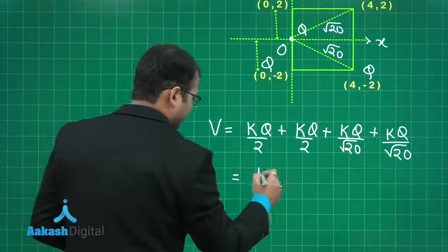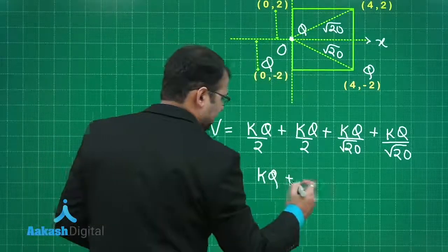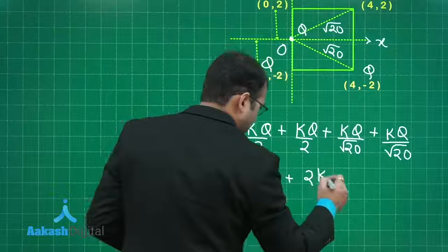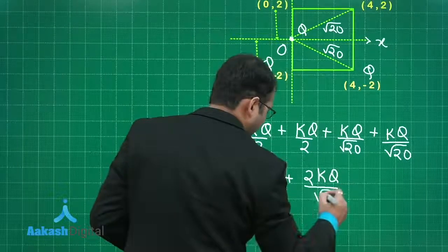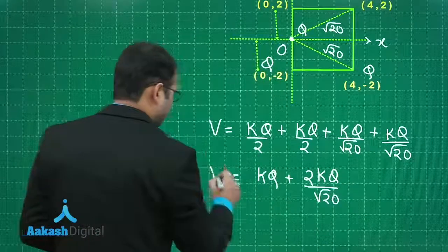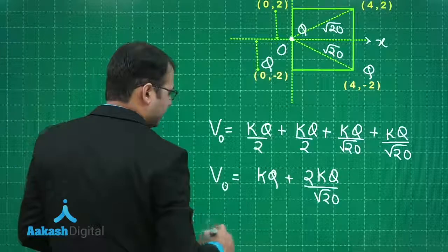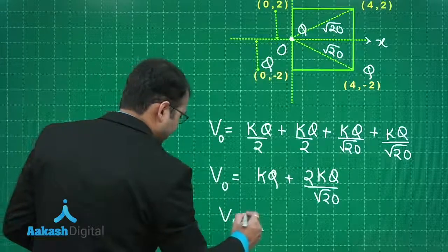On solving this you will get KQ plus 2KQ by root of 20. This would be potential at O, and potential at infinity would be 0.